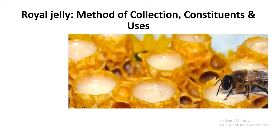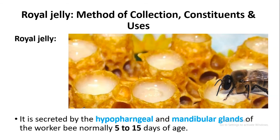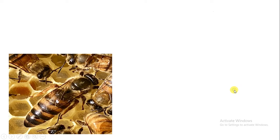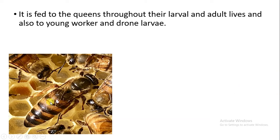Hello students and welcome. Today our topic is royal jelly, and in this video we will study about the method of collection, constituents, and the uses of royal jelly. Royal jelly is secreted by the worker bees, which have hypopharyngeal and mandibular glands. Worker bees that are about 5 to 15 days of age are able to secrete this secretion called royal jelly.